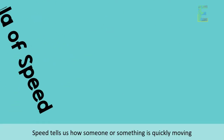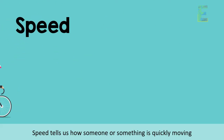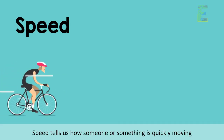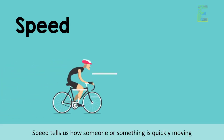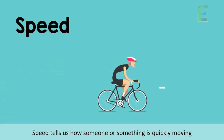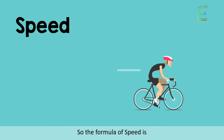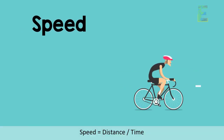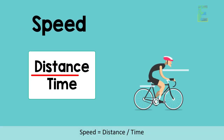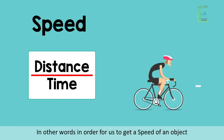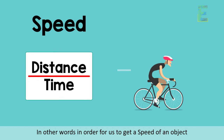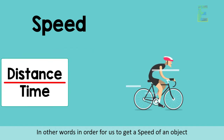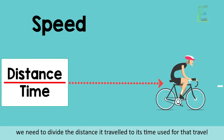Speed tells us how quickly someone or something is moving. The formula of speed is: speed is equal to distance over time. In other words, in order for us to get the speed of an object, we need to